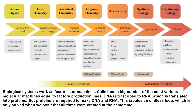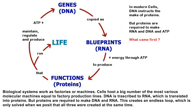There is a long list of products essential to the appearance of the first cell. Biological systems work as factories — cells host a large number of the most various molecular machines, equal to factory production lines. DNA is transcribed to RNA which is translated to proteins, but proteins are required to make DNA and RNA. This creates an endless loop which is only solved when we posit that all three were created at the same time.